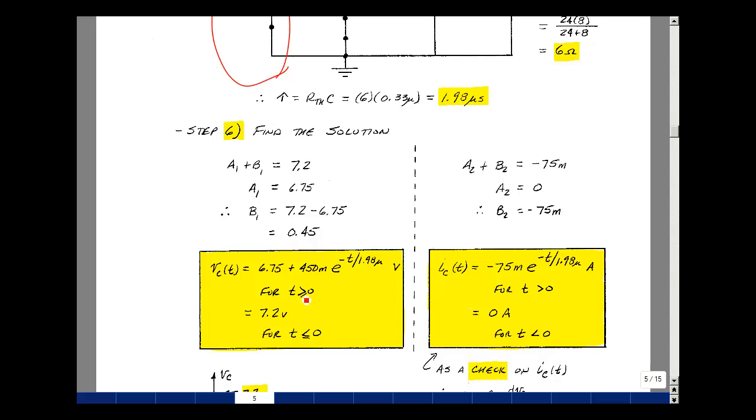If you evaluate this equation at t equals zero, you get the sum of these two, and that turns out to be 7.2 volts. And that was of course our value for t less than zero.